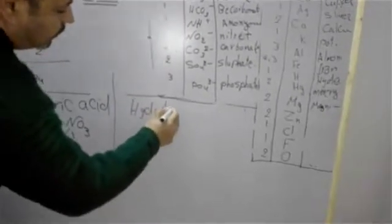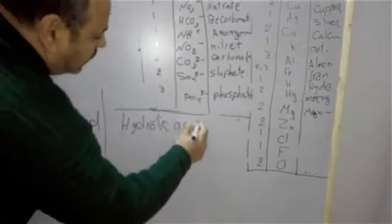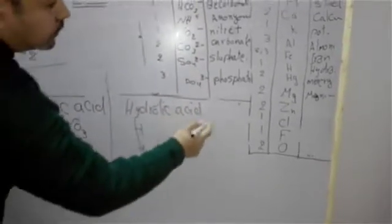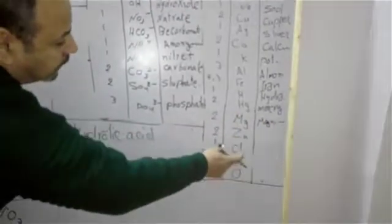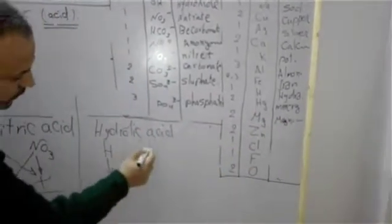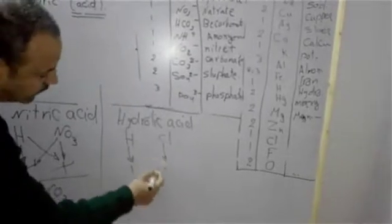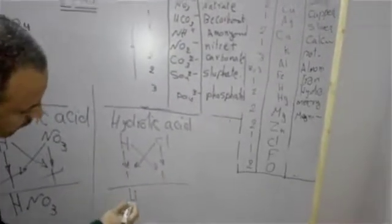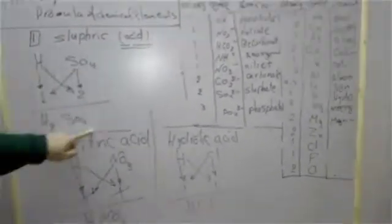Hydrochloric acid. H, valency 1, chlorine Cl, valency 1. HCl. Sulfuric acid H2SO4, nitric acid HNO3, hydrochloric acid HCl.